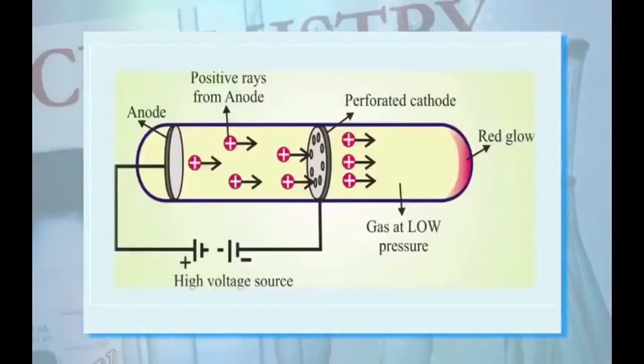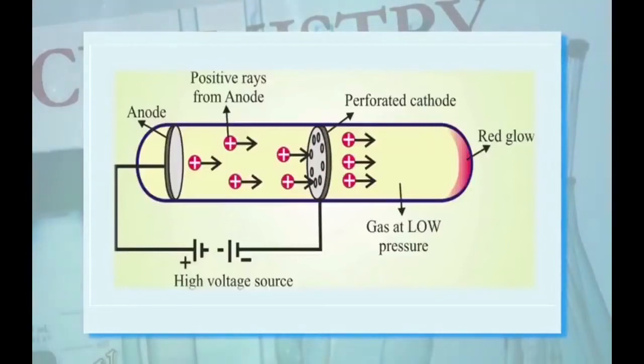Discovery of Proton: Goldstein performed an experiment using a discharge tube similar to a cathode ray tube. Here, a perforated cathode was used and fixed in the middle of the discharge tube. On applying a high voltage, a faint red glow was observed behind the perforated cathode. The glow was due to anode rays, which are a stream of positively charged particles originating at the anode and moving towards the cathode. The glow is produced when these particles strike the glass tube behind the cathode.